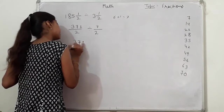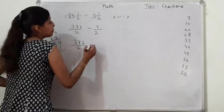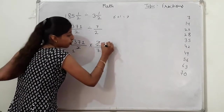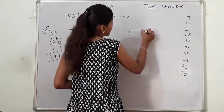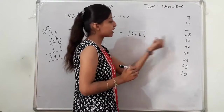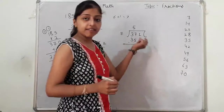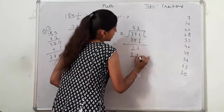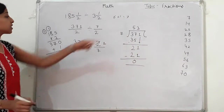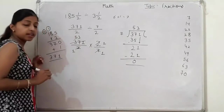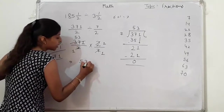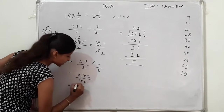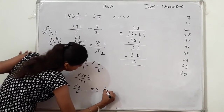अब क्या करूँगी मैं — 371 by 2, divide वाले sign को multiply में change करूँगी। Multiply करने से साथ वाला number reciprocal होगा — 2 by 7। तो 2 cancel हो जाएगा। अब 7 के table पे 371 देखना है — 3, 5's are 35, minus करो, 2 बचा। ऊपर से 1 लो — 21, 3×7=21, minus 0। Clear — तो your answer is 53। 53 multiply 1 by 1 — यानि 53 is your answer।